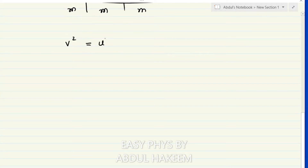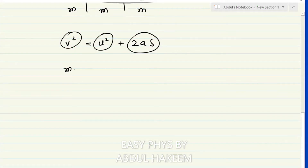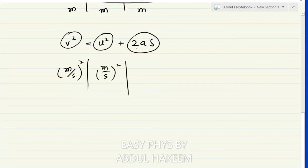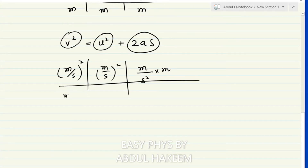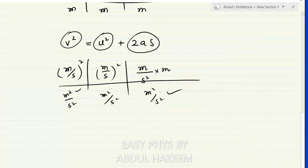Similarly, for v² = u² + 2as, there are three terms. v² gives meter²/second²; u² gives meter²/second²; and 2as gives meter/second² × meter = meter²/second². All three terms have the same unit, meter²/second², so this equation is also homogeneous.